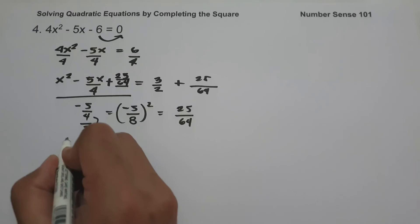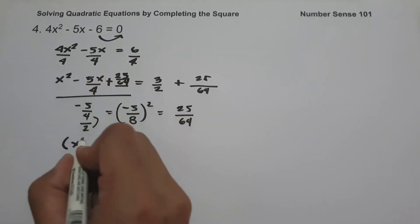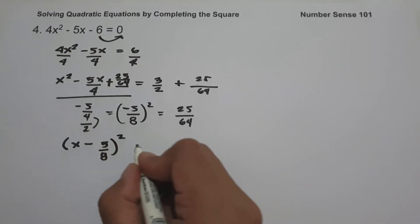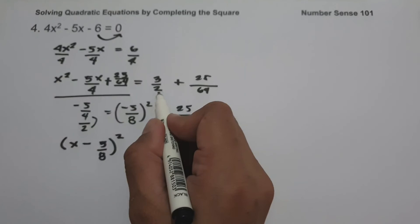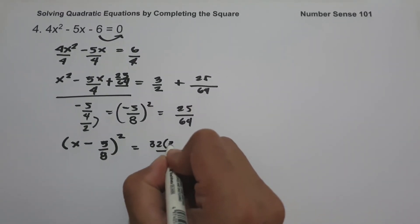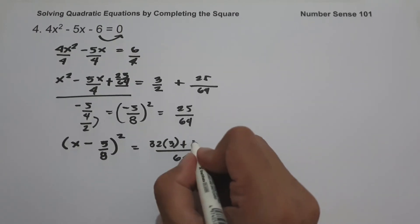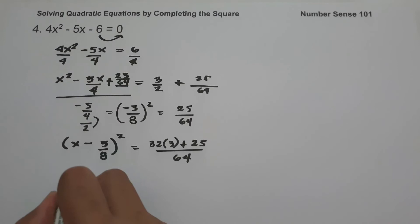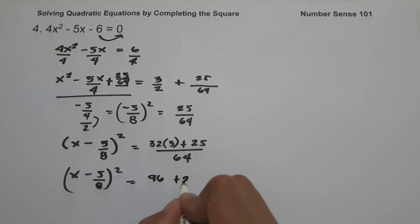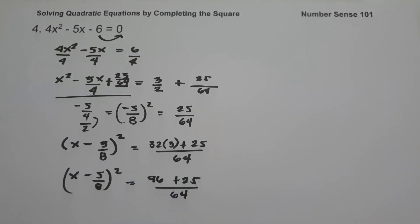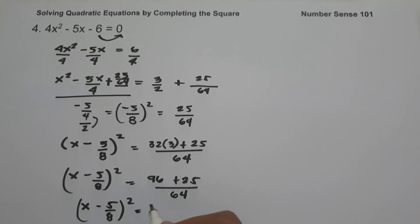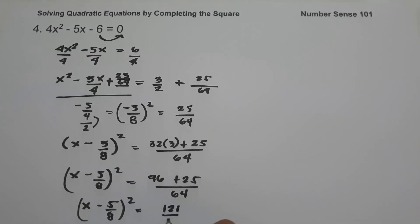Factoring the left side: x minus 5 over 8, quantity squared. Simplifying the right side: the LCM of 2 and 64 is 64. So the right side is 64 divided by 2 times 3 plus 25, all over 64, which is 32 times 3 plus 25 over 64, giving 96 plus 25 over 64, that is 121 over 64.